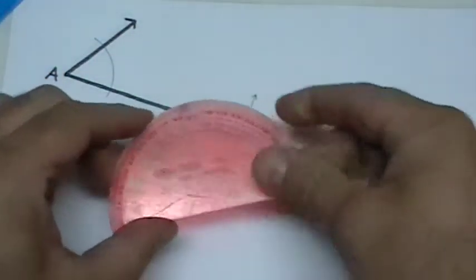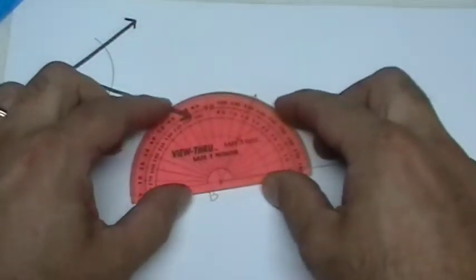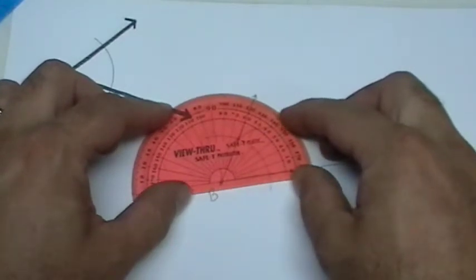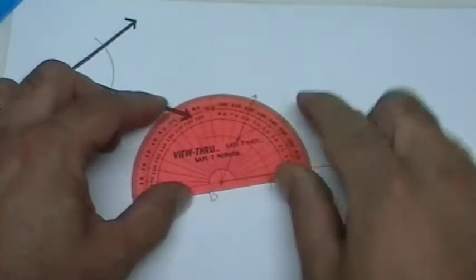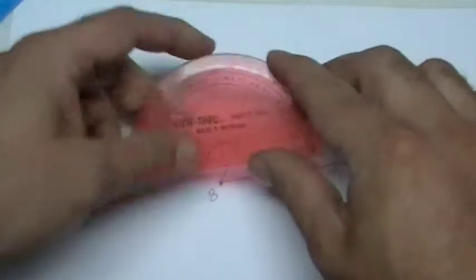I'm just going to use my protractor to verify the angle measurements are the same. I put my center of my protractor on the vertex of the angle.